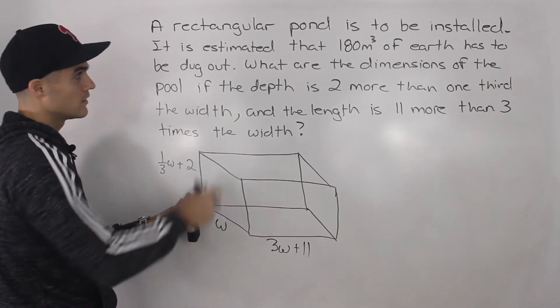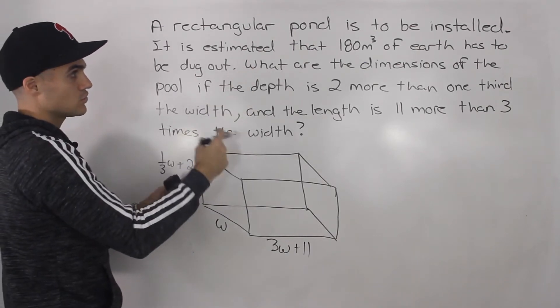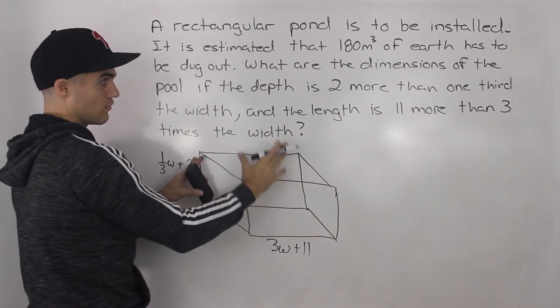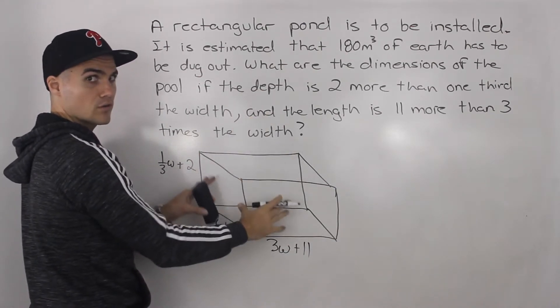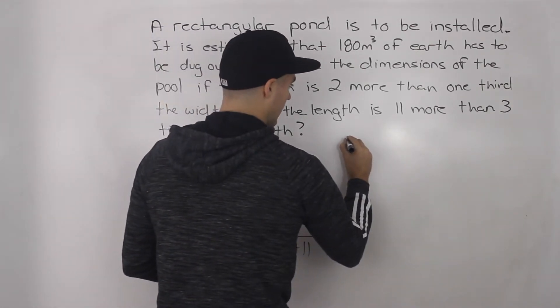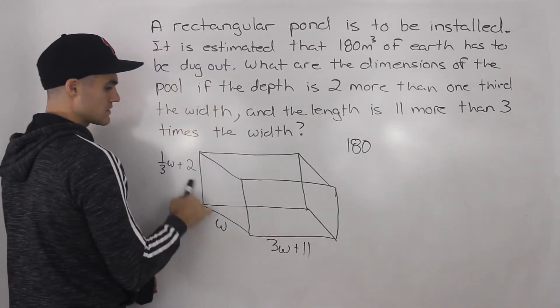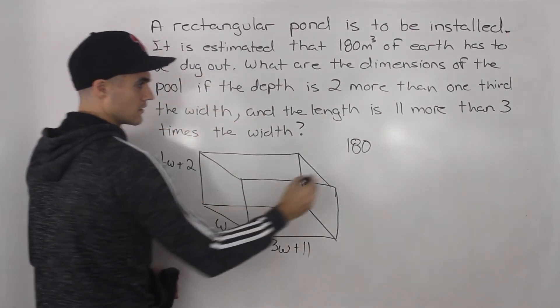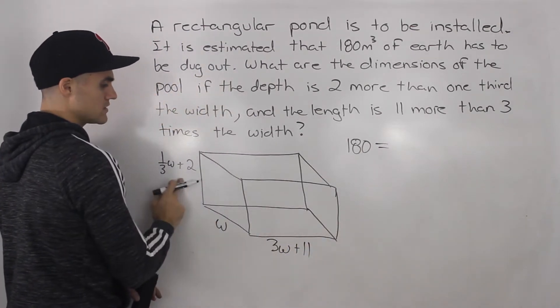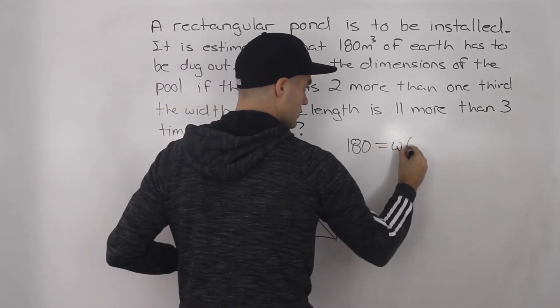So now notice that it says in the question that 180 meters cubed of earth has to be dug out, meaning that the 180 meters cubed is going to be the volume of the pool. And the volume is length times width times height. So we know that 180 has to equal basically all of these expressions multiplied together. So let's actually put the w first just to make it look nicer.